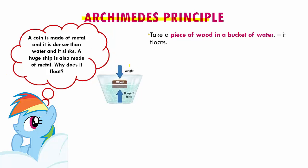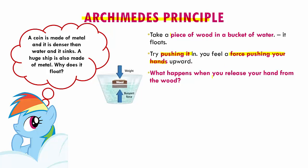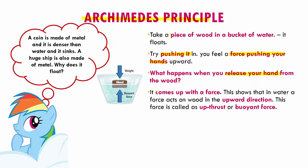To understand this, let's take a piece of wood in a bucket of water — we know that it floats. Now if we try pushing it into water, we can feel a force pushing our hands upward. Even at a swimming pool, if you push a floating board inside the water, you will feel it pushing back, giving you an opposite force. If you release the wood, it will come back up with a force, showing that water acts on the wood in an upward direction. This force from water acting upward is called upthrust or buoyant force.